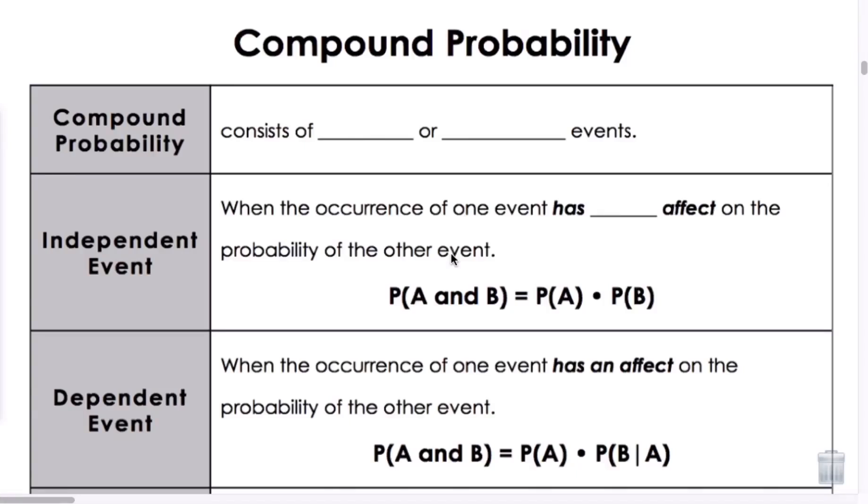This is lesson 11.2 on compound probability. Compound probability consists of two or more events.